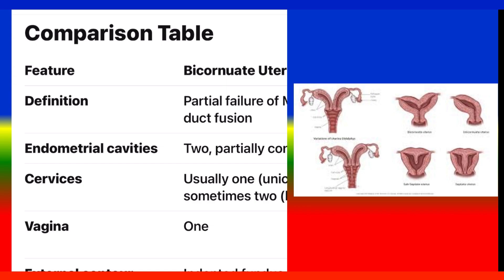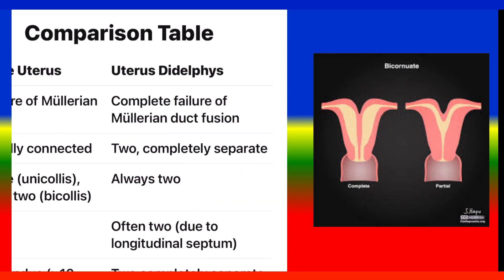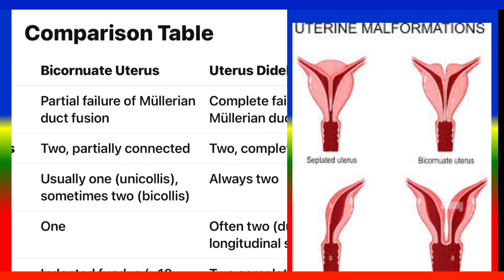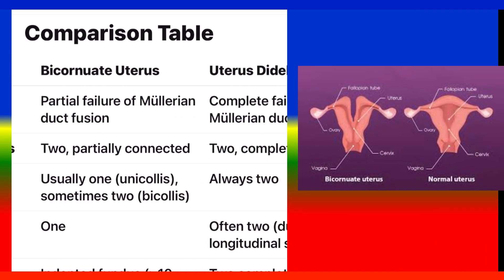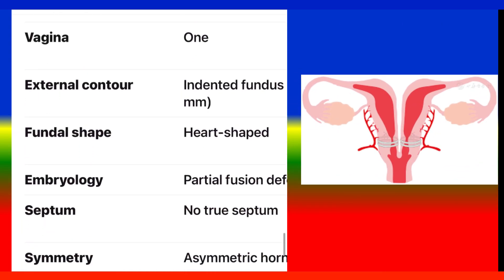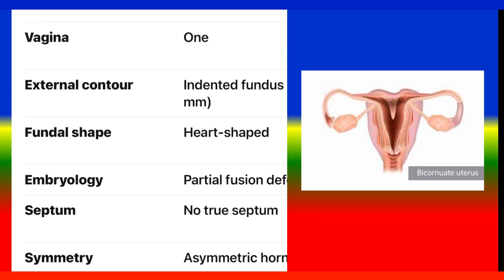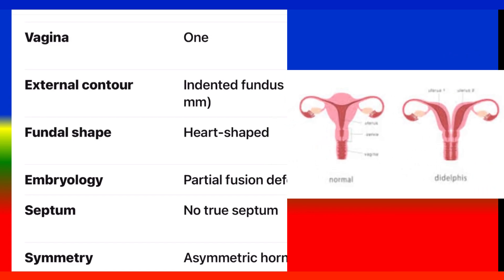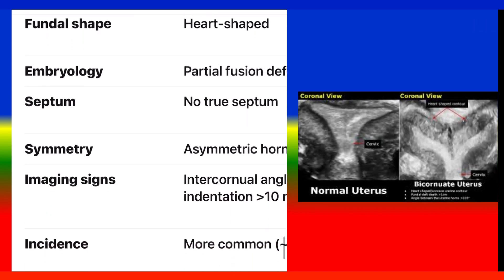Comparison table — Bicornuate uterus vs. Uterus didelphys. Definition: partial failure vs. complete failure of Müllerian duct fusion. Endometrial cavities: two partially connected vs. two completely separate. Cervices: usually one (unicollis), sometimes two vs. always two. Vagina: one vs. often two due to longitudinal septum. External contour: indented fundus over 10 mm vs. two completely separate fundi. Fundal shape: heart-shaped vs. two convex/flat fundi standing separately. Embryology: partial fusion defect vs. complete fusion defect.